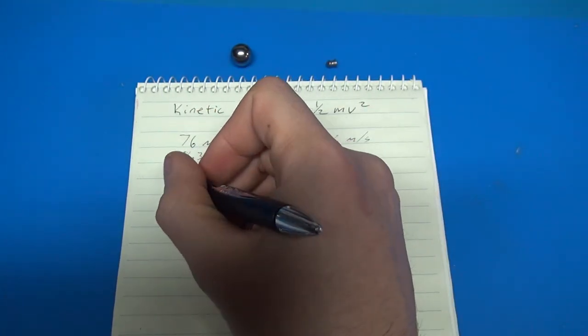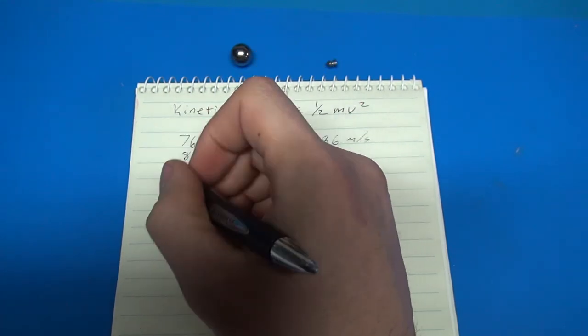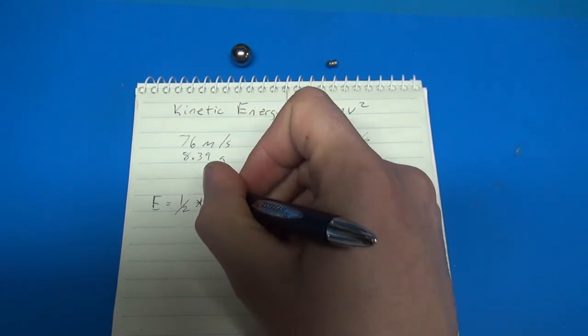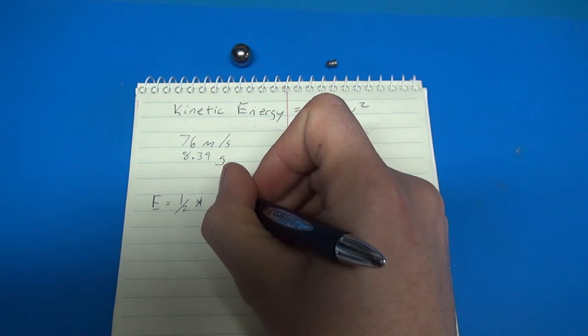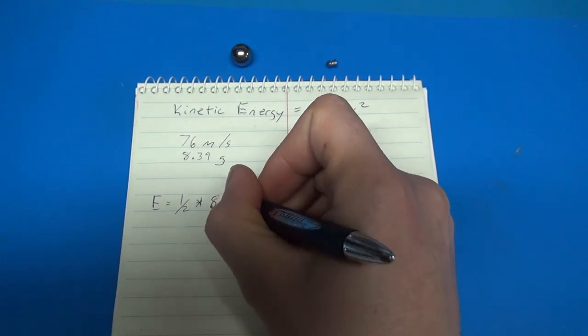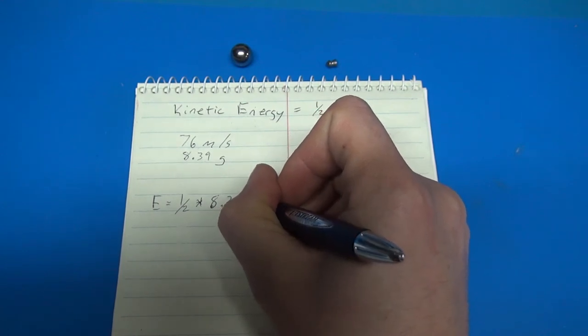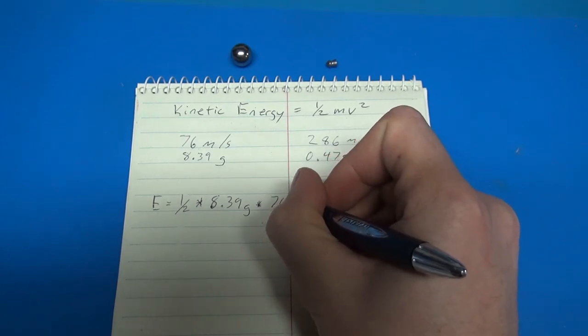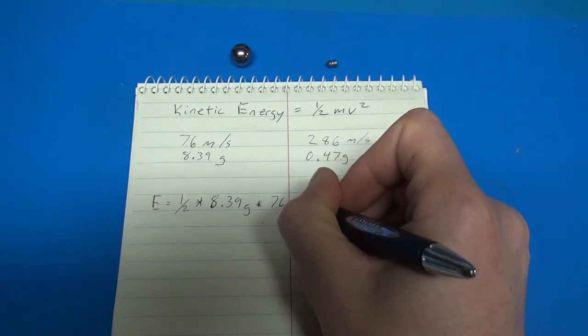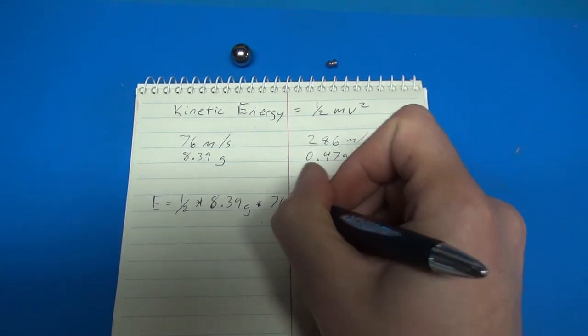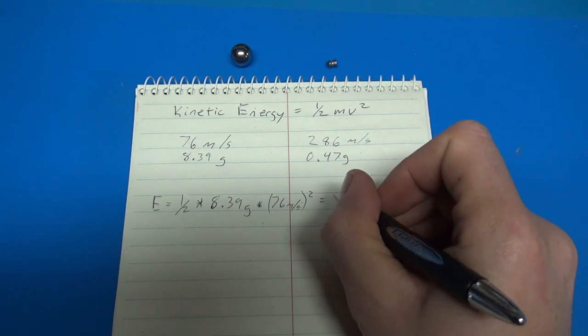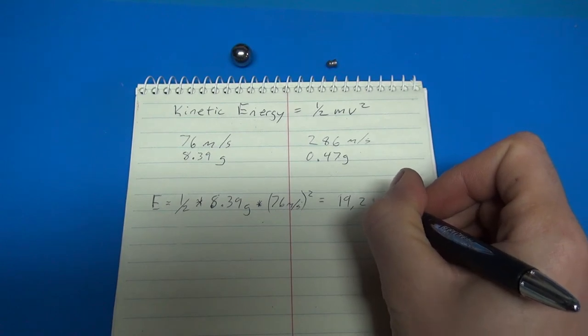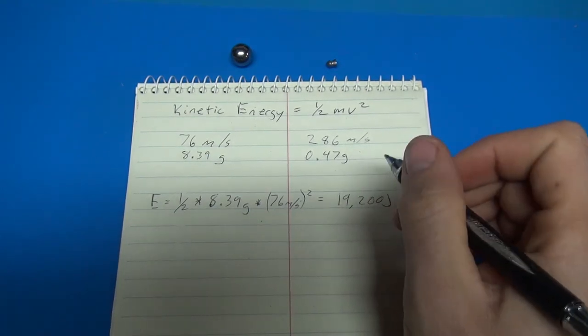So when you do the equations, I'll do the one for the ball bearing first. First, we've got energy equals one-half times 8.39 grams times 76 meters per second. And then you square this guy, and I get about 19,200 joules. I'll just use three significant digits there.